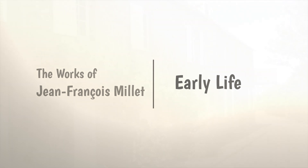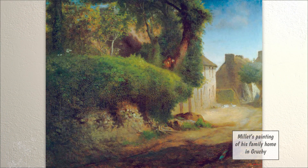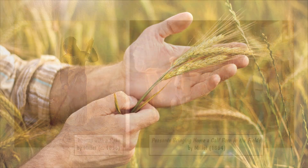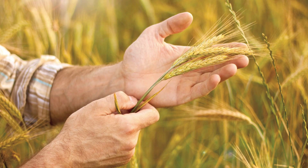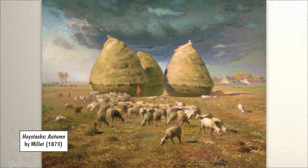Early Life. Jean-Francois Millet was born on October 4, 1814. He was born in the village of Grouchy and Greville-Hague in France. His family lived in the countryside. They were farmers. Millet was the oldest child in the family. He helped his father with a lot of farm work.